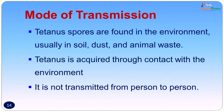How does one get tetanus? Tetanus spores are found in the environment — usually in soil, dust, and animal waste — and are acquired through contact with this environment. Roadside injuries likely to get contaminated with soil are likely to get contaminated with spores of Clostridium tetani. It is never spread from person to person.